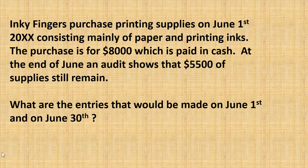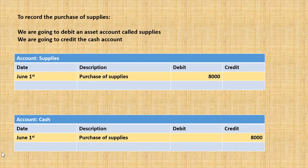Now let's consider a similar example using supplies. Inkyfinkers purchases printing supplies on June the first — mainly paper and printing inks — and pays eight thousand dollars in cash. At the end of June an audit shows they have five thousand five hundred dollars of supplies remaining. The initial entry on June the first is to debit an asset account for supplies with eight thousand dollars and credit the cash account with eight thousand dollars.